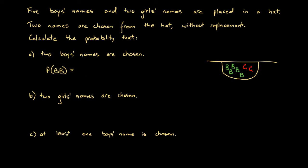The probability that a boy is chosen on the first draw: there are seven names altogether and five of them are boys, so that's five over seven. This is then multiplied by the probability that a boy is drawn on the second draw. If you draw a boy on the first draw, one boy's name is no longer in the hat — this is a dependent probability problem. Now we have six names and four of them are boys, so the probability of a boy on the second draw is four over six.